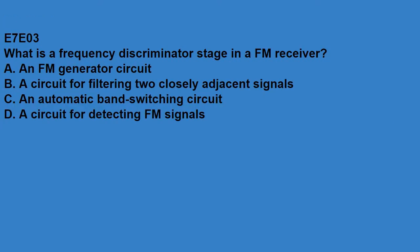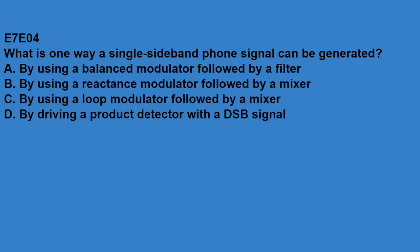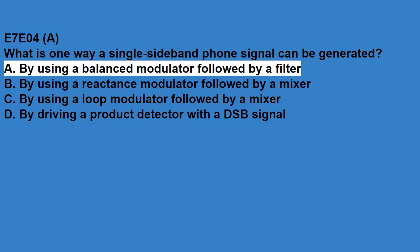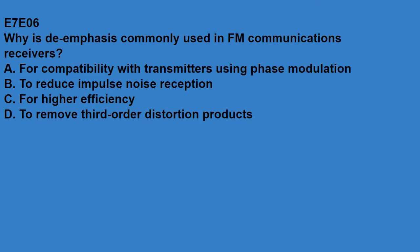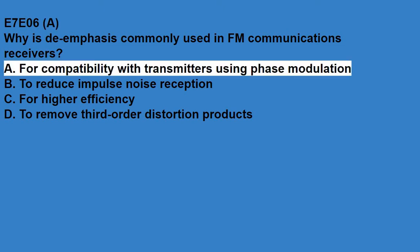E7E03, what is the frequency discriminator stage in an FM receiver? A circuit for detecting FM signals. E7E04, what is one way a single sideband phone signal can be generated? By using a balanced modulator followed by a filter. E7E05, what circuit is added to an FM transmitter to boost the higher audio frequencies? A pre-emphasis network. E7E06, why is de-emphasis commonly used in FM communications receivers? For compatibility with transmitters using phase modulation.